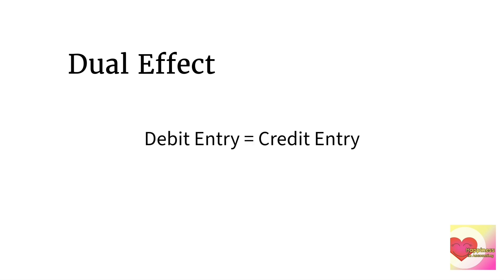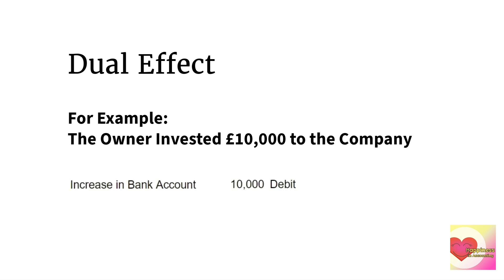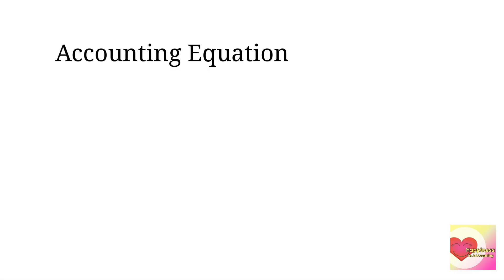The debit entry should always be equal to the opposite credit entry. For example, the owner invested 10,000 to the company: the bank account increases by 10,000 — it goes to debit — and the capital increases by 10,000 — it goes to credit. The dual effect here is an increase in asset and an increase in capital.